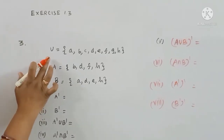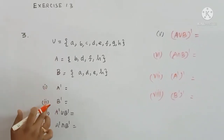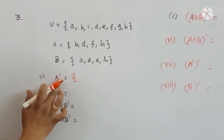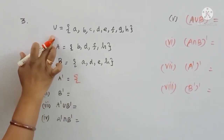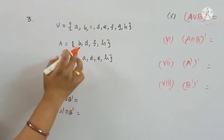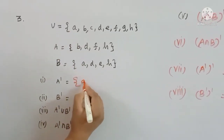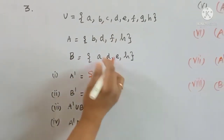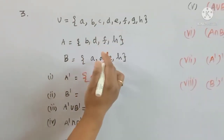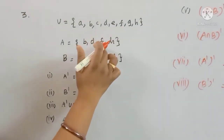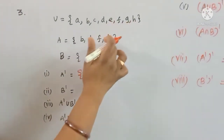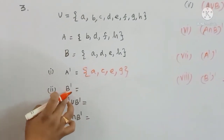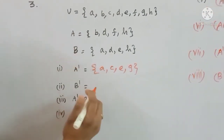First, the universal set is A union B. The first subdivision is A dash — A complement means elements not in A. A dash is the complement of A with respect to U.